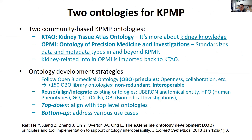KTAO is more like a kidney knowledge base — a graph knowledge where you can put all the information. It's not only independent cell lines or atomic entities and molecules; we are linking them together. OPMI means Ontology of Precision Medicine and Investigations. We use it to standardize data and metadata absorbed in precision medicine and investigations, and it can go beyond kidney — like lung or heart or others.